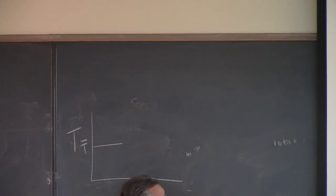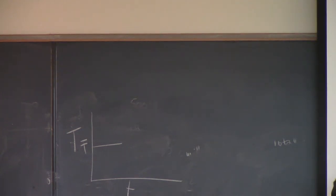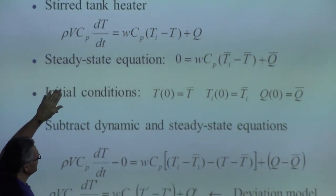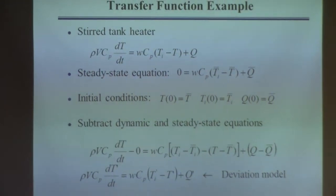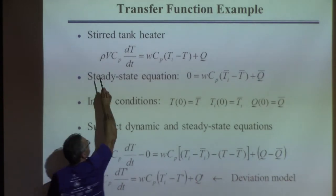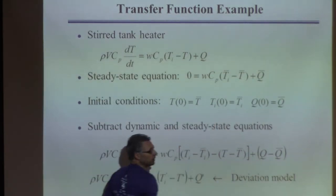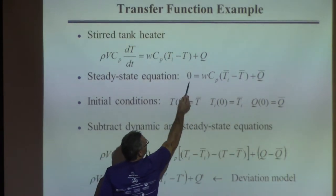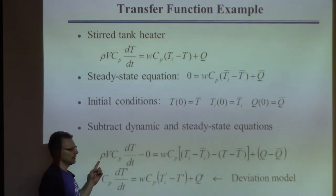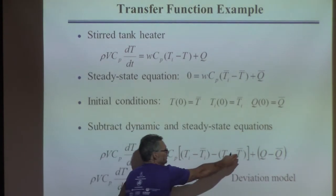Now, to find the transfer function, we have to take the Laplace transform of the equation. But first, we put this equation in terms of deviation variables, because we want to specify the transfer function in terms of those deviation variables. All I've done in this step is take the differential equation and subtract off the steady state equation from it — differential equation minus steady state — and gather those terms together.